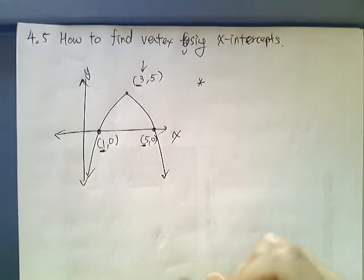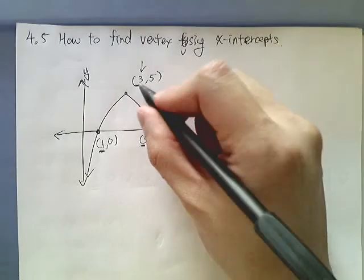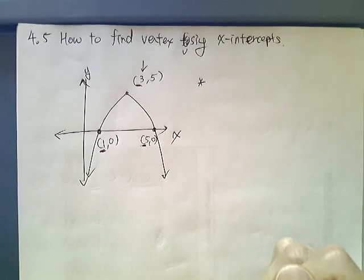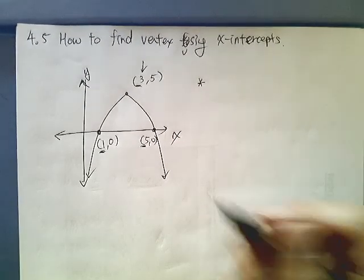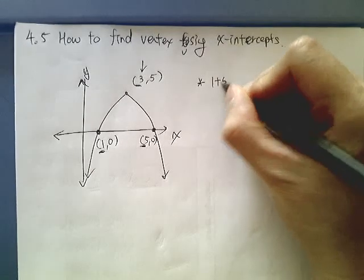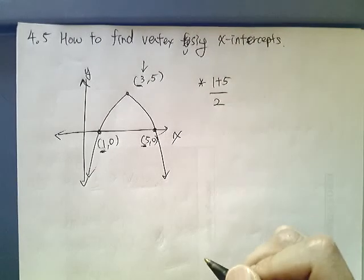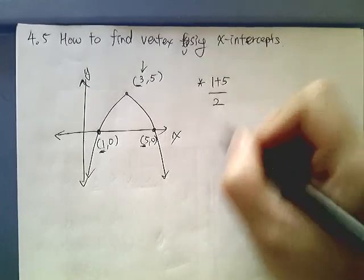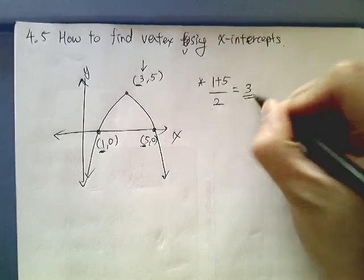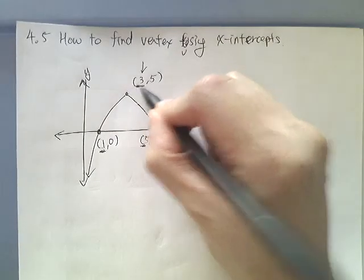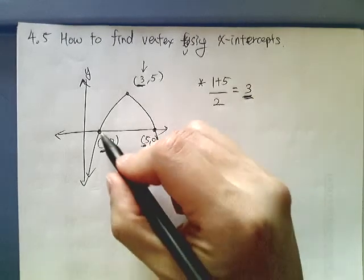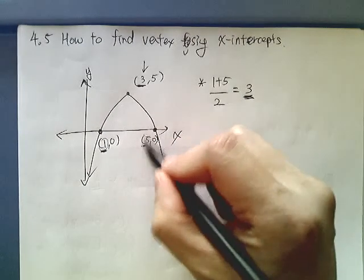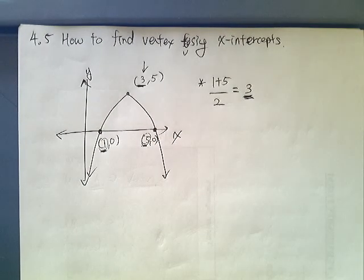Now, how do I show that algebraically? Well, 3 is an average of these two points, these two numbers. So how do I get the average? Well, I simply add the numbers and divide it by the number of additions, which is 2 in this case, which is 3. See, the x-value of the vertex is simply the middle value of the x-intercepts.